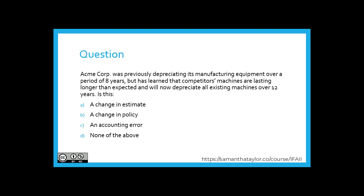A question: Acme Corp was previously depreciating its manufacturing equipment over a period of eight years, but has learned that competitors' machines are lasting longer than expected and will now depreciate all existing machines over 12 years. Is this: A) a change in estimate, B) a change in policy, C) an accounting error, or D) none of the above?